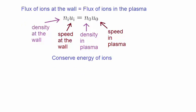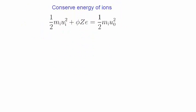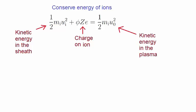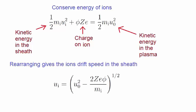We start by conserving the energy of the ions. The kinetic energy in the sheath and the potential energy, where Z is the charge on the ion, must equal the kinetic energy in the plasma. Rearranging this gives the drift speed of the ions in the sheath, Ui.